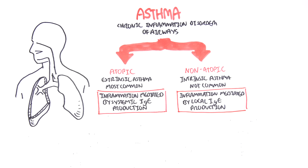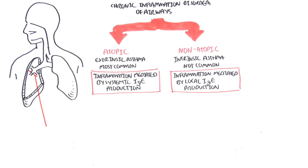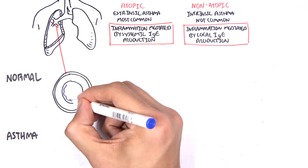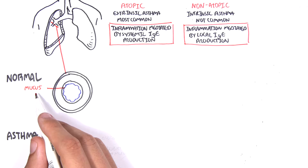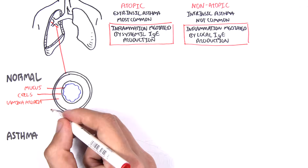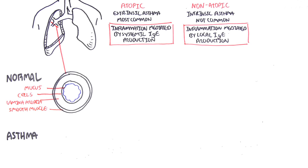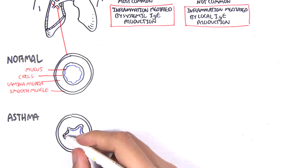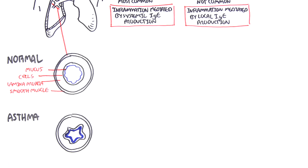Let us look at a cross-section of a normal bronchiole. Here we have the mucus layer, pseudostratified epithelial cells, the lamina propria, and the smooth muscles surrounding all this. If we were to look at an asthmatic bronchiole, the lumen inside is much narrower. But first, let us look at the normal histological layers of a bronchiole.